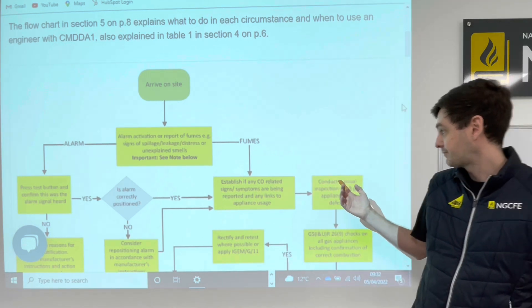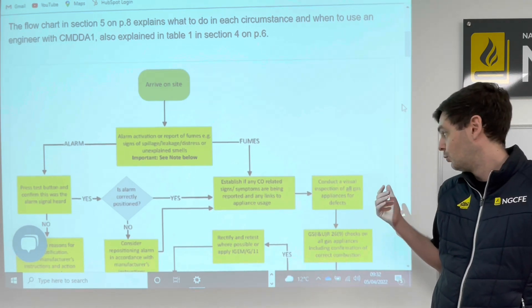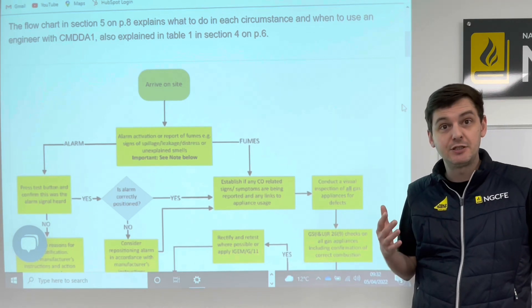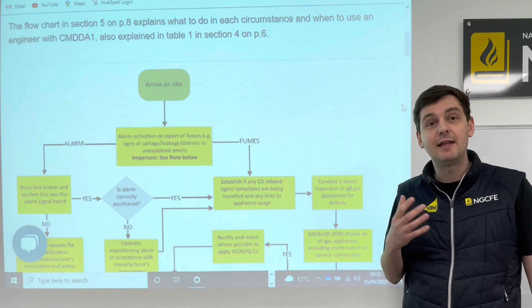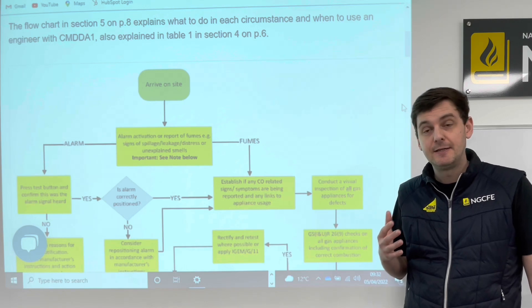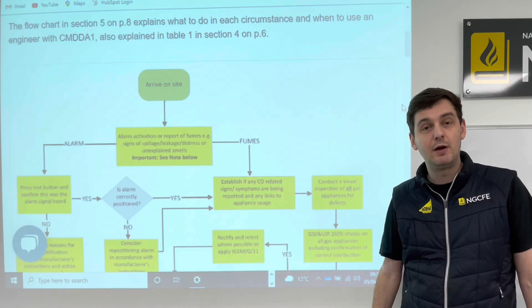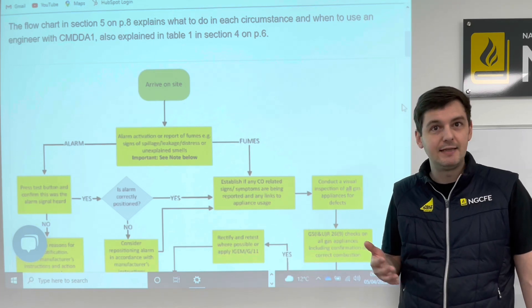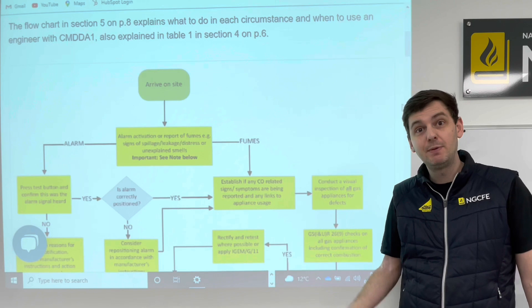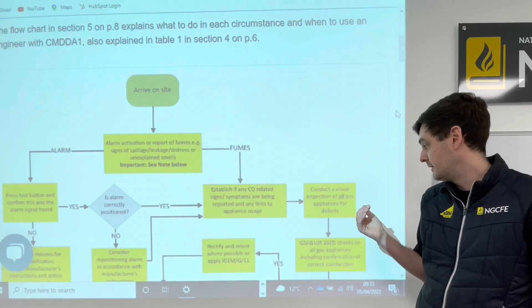We conduct a visual inspection of all appliances in the property. That visual inspection covers location, stability — is there any flue break, any signs of spillage, anything that leads you to believe there's an issue with that appliance? Signs of spillage is a big one. Also, if the customer tells you they always feel a bit nauseous or get headaches of an evening — do you have any appliances running in the evening? 'Yes, we have the fire on, it tends to be when the fire is on.' Well, that's a sure-fire indication there might be an issue with the fire.